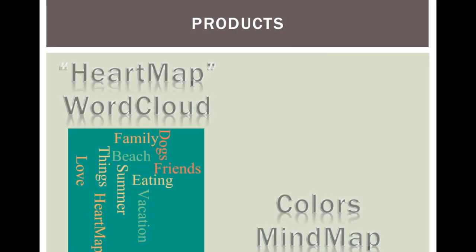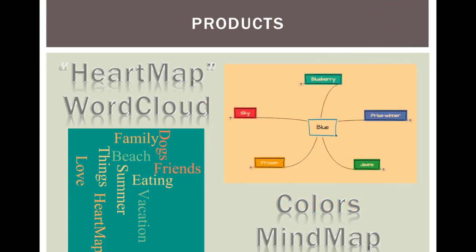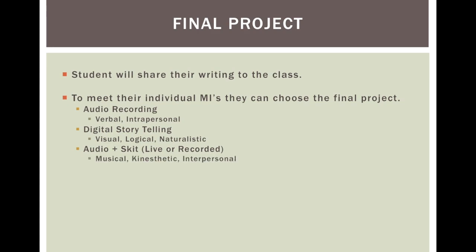When learning about how to incorporate colors into writing, students will do a mind map of colors — for example, the color blue can be associated with the sky. To address individual multiple intelligences, students can choose their final project format. The audio recording option is for verbal and interpersonal learners. Digital storytelling is perfect for visual, logical, and naturalistic multiple intelligences.